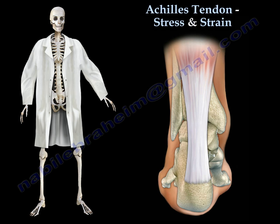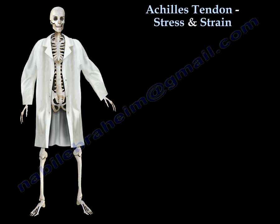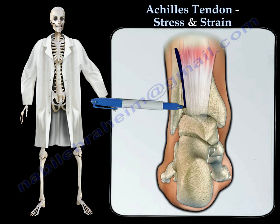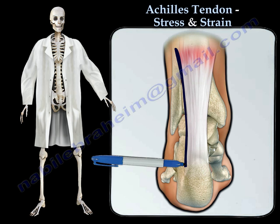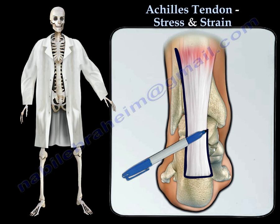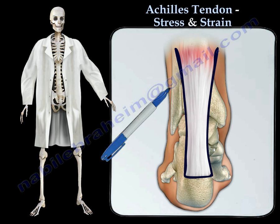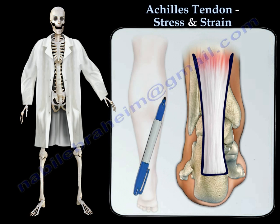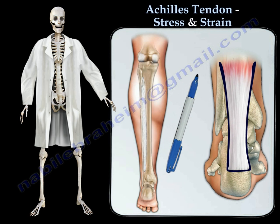Here is an easy way to learn the anatomy of the Achilles tendon. The Achilles tendon is located in the posterior ankle. It is the strongest and thickest tendon in the body, formed from the soleus and gastrocnemius muscles.